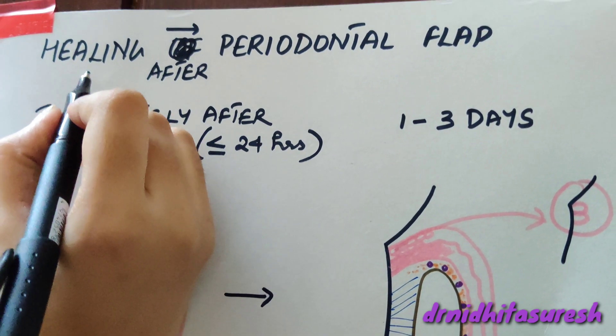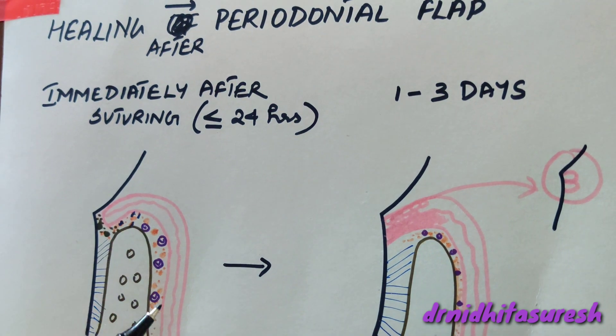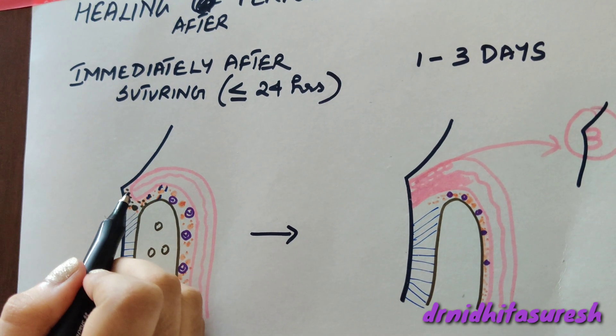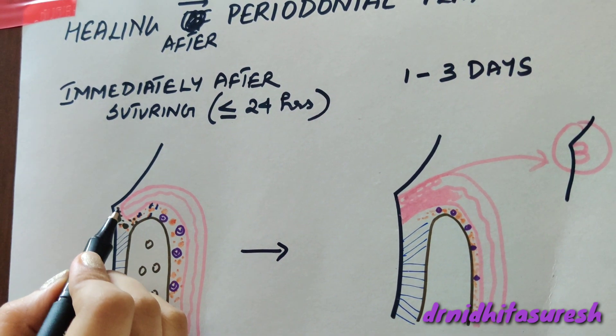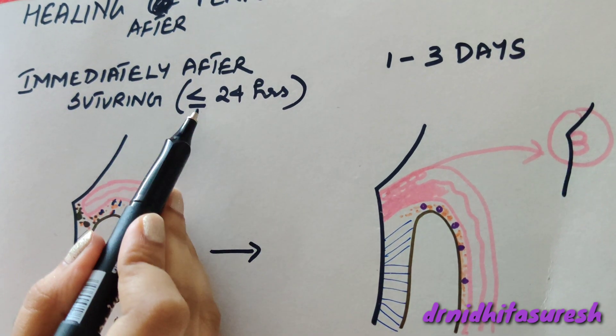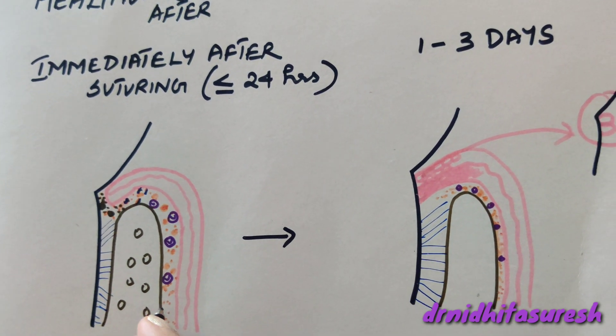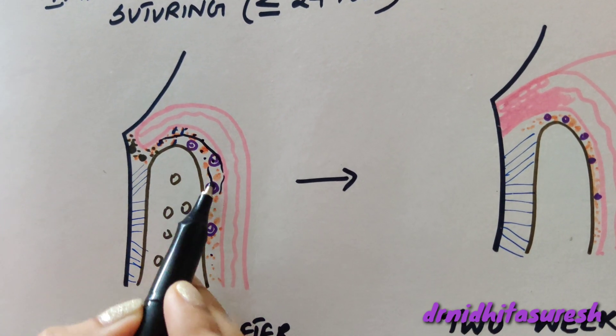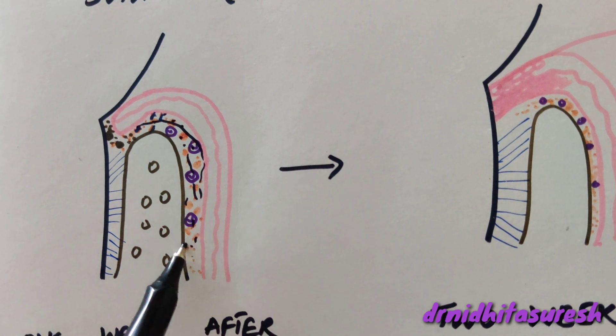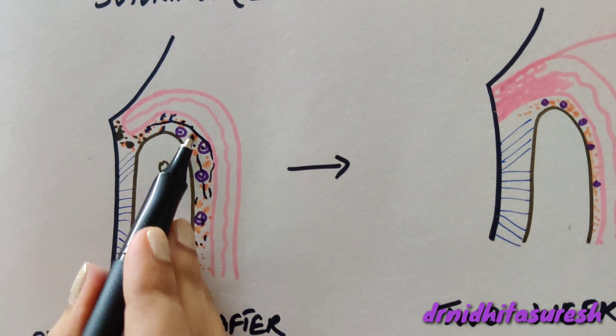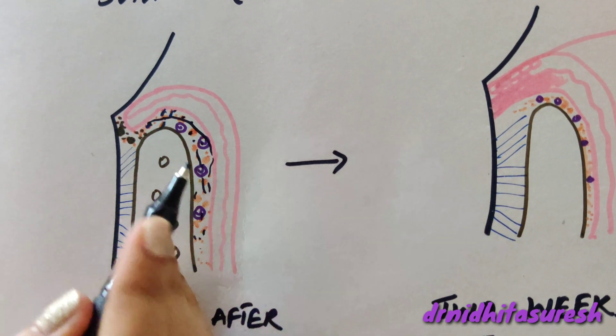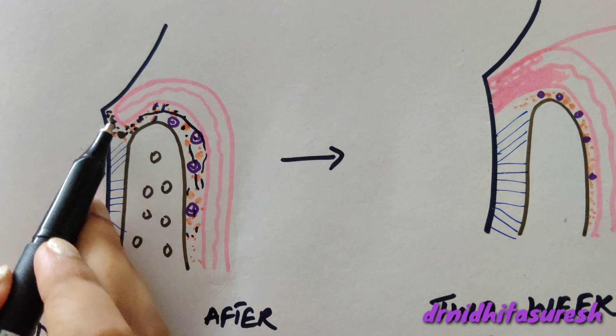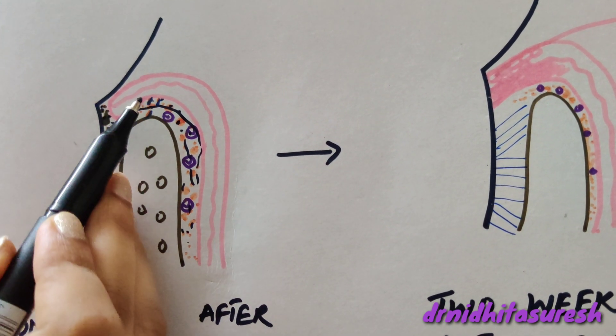Next is healing after periodontal flap. The periodontal flap is reflected, we've done the osseous surgeries, and then we suture it back. Immediately after surgery, less than or equal to 24 hours, a blood clot forms which is rich in fibrin. You will have leukocytes and erythrocytes. The blood clot forms between the tooth bone and the flap.